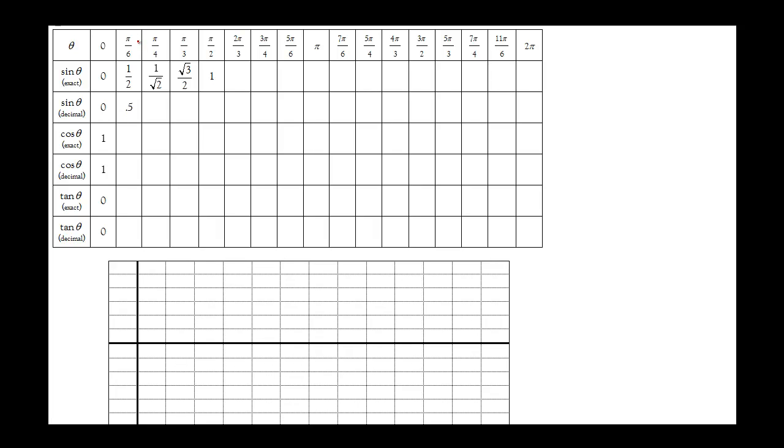First, we're going to look at our special triangle angles. I'm going to start with pi over 6. I'll convert pi over 6 to degrees, which is 30 degrees. I'll figure out which quadrant it's located in. In this case, it's in quadrant 1.